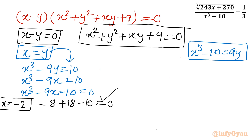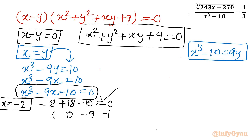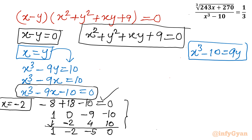Now I'll apply synthetic division with root -2 on the cubic x³ - 9x - 10. Coefficients are 1, 0, -9, -10. Bringing down 1; multiplying: -2 × 1 = -2; 0 + (-2) = -2; -2 × (-2) = 4; -9 + 4 = -5; -2 × (-5) = 10; -10 + 10 = 0. The resulting quadratic is x² - 2x - 5 = 0.